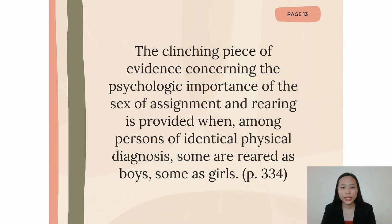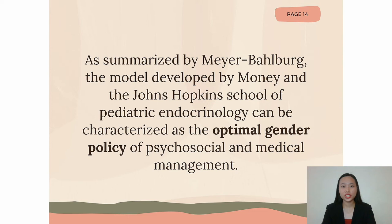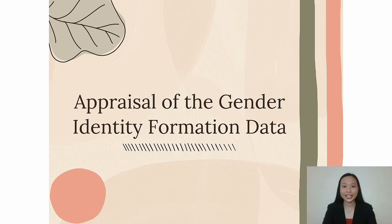Hence, we can observe that the way a child is raised truly affects whether they develop feminine or masculine behavior. Because gender identity differentiation is malleable, it became necessary to replace reliance on identifying the patient's true sex with a different model for guiding decisions regarding gender assignment. As summarized by Mayer-Bahlburg, the model developed by Money and the Johns Hopkins School of Pediatric Endocrinology can be characterized as the optimal gender policy of psychosocial and medical management. This policy aimed to result in the best possible prognosis with regards to six variables: reproductive potential if attainable, good sexual function, minimal medical procedures, overall gender-appropriate appearance, stable gender identity, and psychosocial well-being.